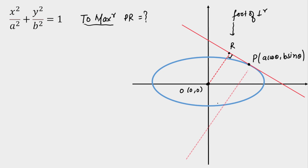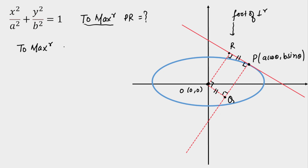From point P I'm going to draw the normal, which is obviously parallel to OR (the perpendicular from the origin to the tangent). On this normal at point P to the ellipse, I'm going to drop a perpendicular from the origin — let's call the foot of that perpendicular Q. Since both angles are 90°, these two sides are equal: PR = OQ. So maximizing PR is equivalent to maximizing OQ.